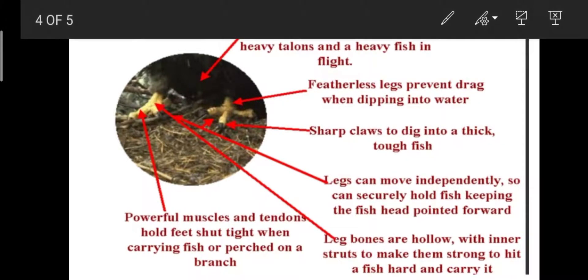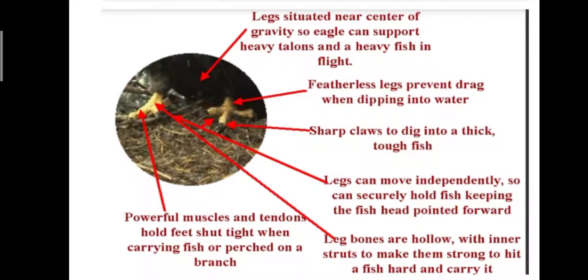The legs are situated near the center of gravity so the eagle can support heavy talons and a heavy fish in flight. Featherless legs prevent drag when dipping into water. Sharp claws dig into thick, tough fish, and the legs can move independently so the eagle can securely hold a fish, keeping the fish head pointed forward.